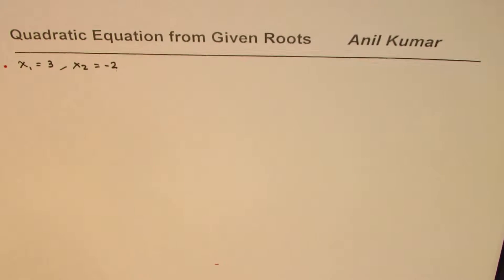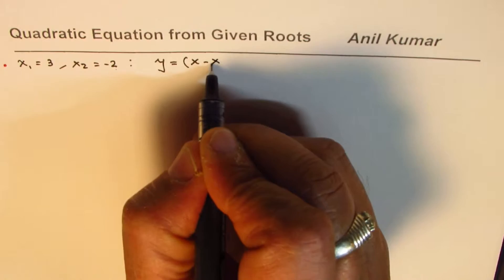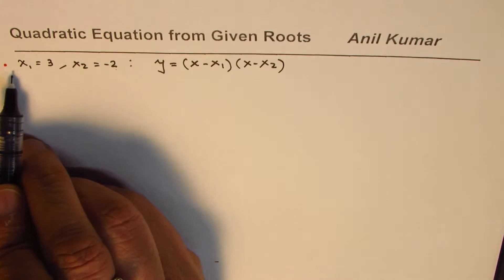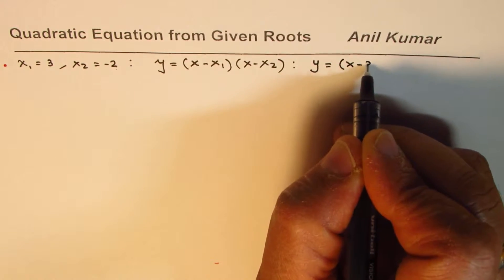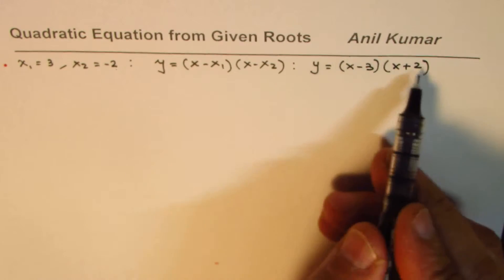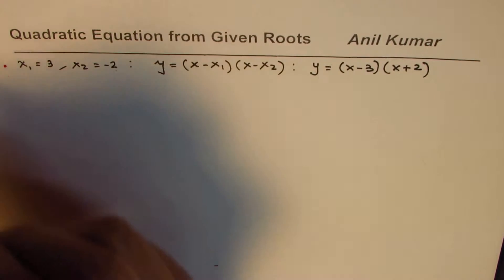These are the two roots and we need to find the quadratic equation. Since we know these are the two roots, the quadratic equation y equals x minus x1 times x minus x2. In our case, y equals x minus 3 times x plus 2. You can always expand this to get the quadratic equation in standard form, or leave it in factored form.